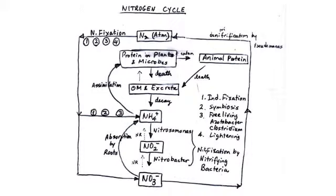Our topic today is the nitrogen cycle. Nitrogen is very essential for us as living beings — it is present abundantly in our cells and tissues. However, we cannot synthesize organic nitrogen on our own, which is why we need to take nitrogen in from our diet in the form of protein. Here we are looking at how the nitrogen cycle works and how nitrogen is cycled from the atmosphere.